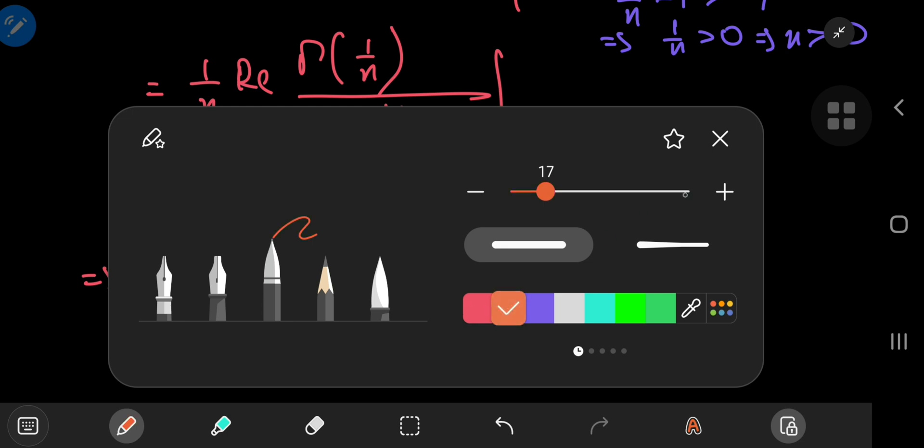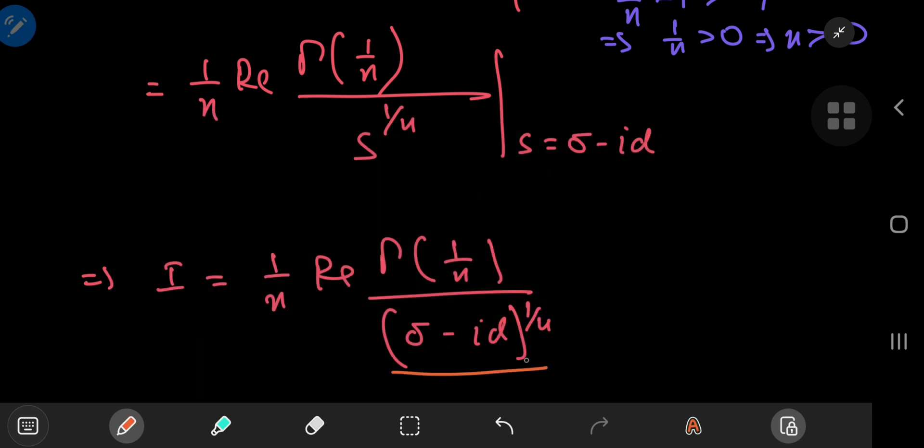And we're now interested in separating the denominator into real and imaginary parts. And for that, we have to simplify the denominator. And for that, I'm going to need the polar representation of this complex number down here.